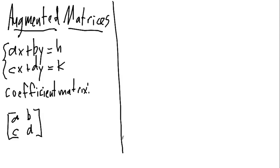We also get what, the book doesn't give this a name, but I'm going to call it the constant matrix. And it's really a column matrix, and it's just the two constants on the right side of the equation, H and K.